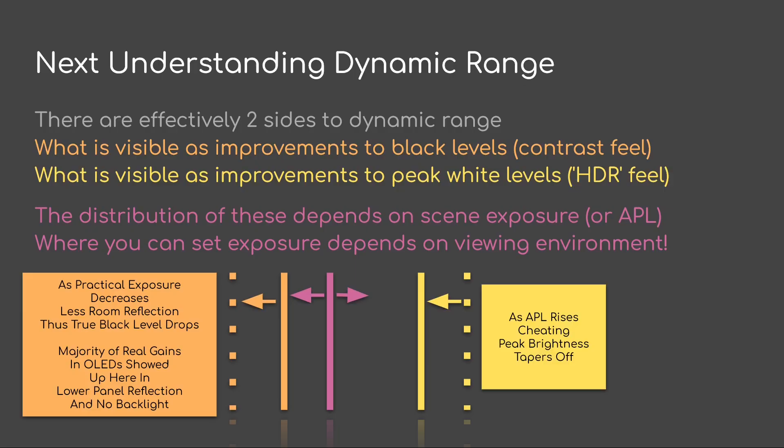Next, let's dive into understanding dynamic range a little bit better. There are effectively two sides to dynamic range. We have what is visible as improvements to black level — I would call this contrast feel. And then on the other side, we have what is visible as improvements to peak white levels — I would call that HDR feel. The distribution of these depends on scene exposure, or APL. This is where you can set exposure depending on your viewing environment. For games, instead of having a brightness knob, it really should be an exposure knob.